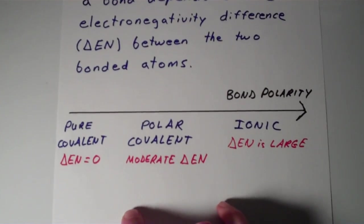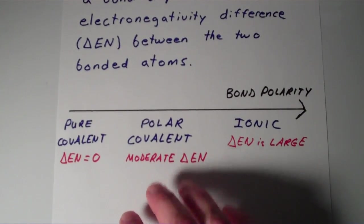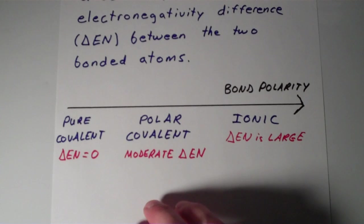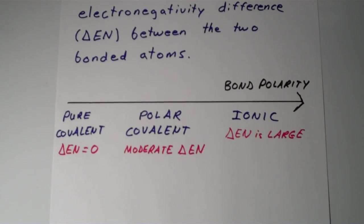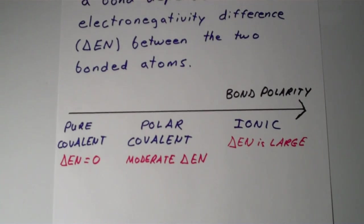Everything else in between is classified as polar covalent. You have a moderate electronegativity difference between two nonmetals. The bond between an oxygen and a hydrogen, the bond between a hydrogen and a chlorine. Indeed, the bond between any two nonmetals that are different, any two heteronuclear nonmetals, we're going to call that polar covalent.